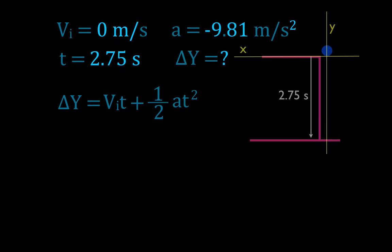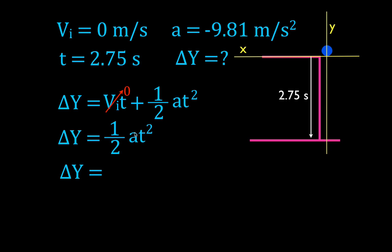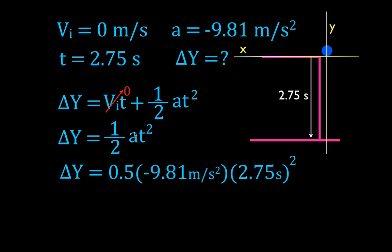We take that equation to the next slide and fill in the information. We're looking for the change in position. Notice that the initial velocity is zero, so the initial velocity times time term equals zero and drops out. This simplifies to: change in position equals ½at². That's a useful subset of the equation for free fall when the initial velocity is zero. Plugging in values: Δy = 0.5 × (−9.81) × (2.75)², which gives a change in position of −37.1 meters.